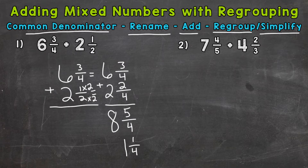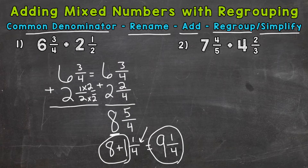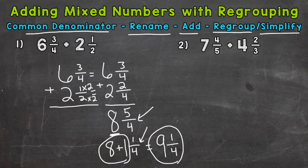That's not our final answer — don't forget about the eight wholes. Let's bring that down and combine our whole numbers. We are regrouping that one whole with the eight, giving us nine wholes. And then don't forget our fraction, so nine and one-fourth. To recap, we converted the improper fraction to a mixed number and regrouped the whole number from that mixed number with the eight. Always check to see if you can simplify the fractional part of your answer. One-fourth is in simplest form — the only common factor between one and four is one. So it's simplified and we are done.